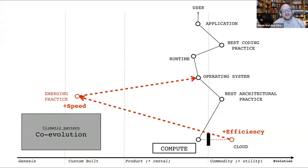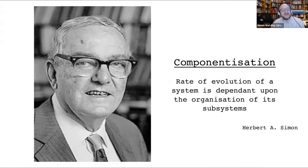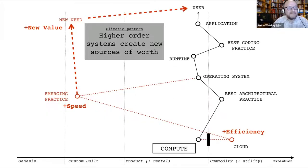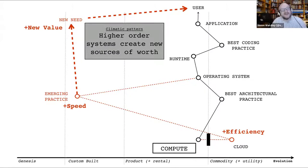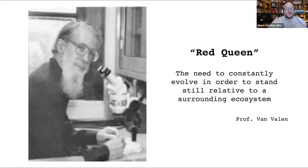As things evolve, there's co-evolution of practice. As compute shifted from product to utility — cloud — a new set of practices emerged: from disaster recovery, test, N+1 to distributed systems, design for failure, what became known as DevOps. Those new practices and efficiencies enabled new needs and new higher-order systems to be rapidly created — componentisation effects, as per Herbert Simon's theory of hierarchy. Electricity enabled radio, television, computing. You get efficiency, speed, and new sources of value — all created by the industrialisation shift from product to utility.